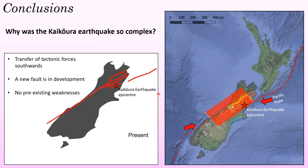What does this mean about the complexity of the Kaikoura earthquake? With this southward development of the Marlborough fault system, the Kaikoura earthquake is evidence that a new fault is in development. With no major pre-existing weaknesses in this area, there's no major fault to break — so perhaps this is why the Kaikoura earthquake was so structurally complex. This means that while this new major fault is in development, we can expect more structurally complex earthquakes in this area in the future.